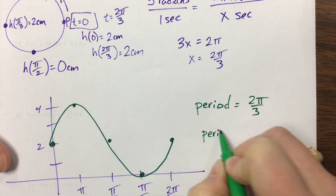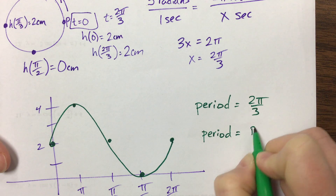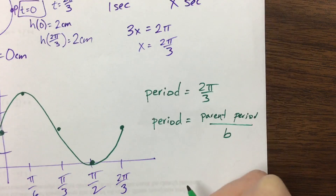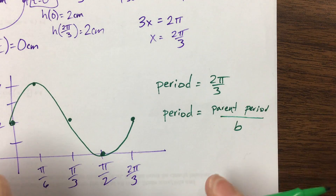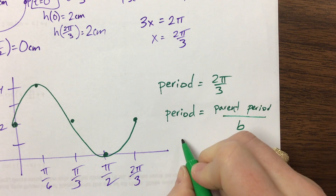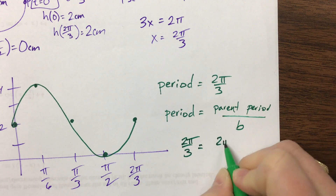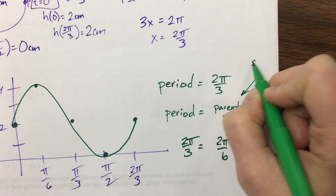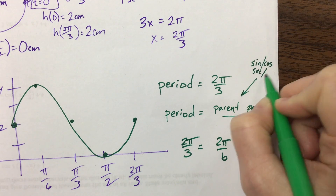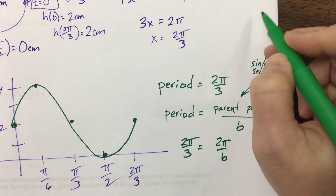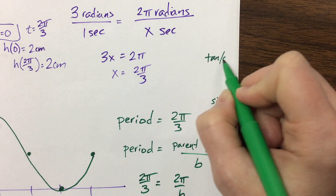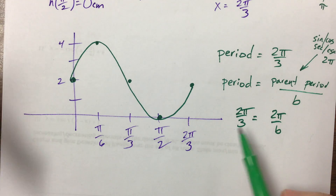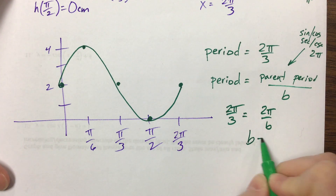Remember, the period equals the parent period divided by b. Since this is sine, the parent function has a period of 2π, so 2π/3 = 2π/b, giving us b = 3. As a reminder, the parent functions sine, cosine, secant, and cosecant have a parent period of 2π, while tangent and cotangent have a parent period of π. Our curve is sine, and so our b value is equal to 3.